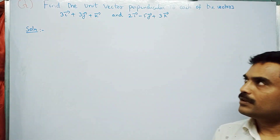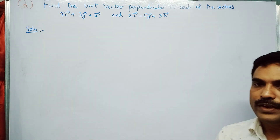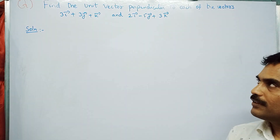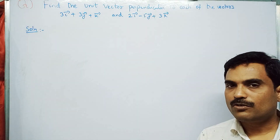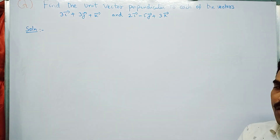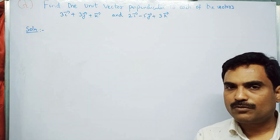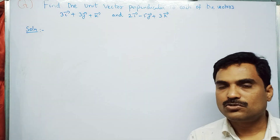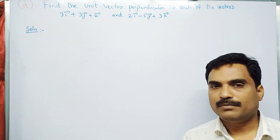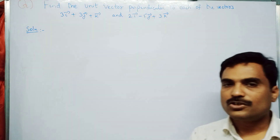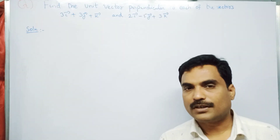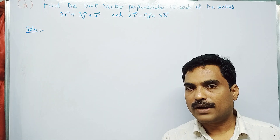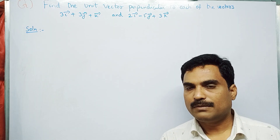In this problem, two vectors are given. Take the first vector as a-bar and the second vector as b-bar. They are asking us to find the unit vector perpendicular to these two vectors a-bar and b-bar. To solve this, remember the formula: n-cap = (a-bar × b-bar) / |a-bar × b-bar|.